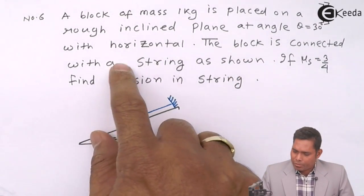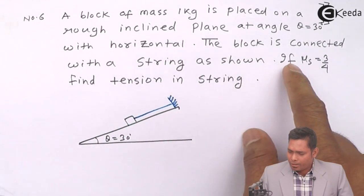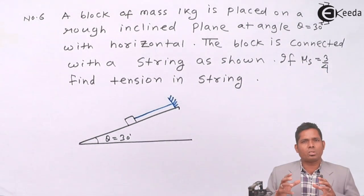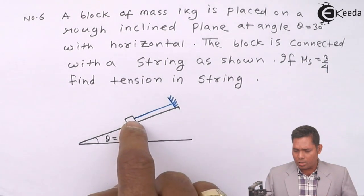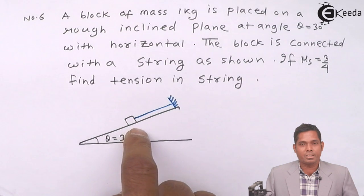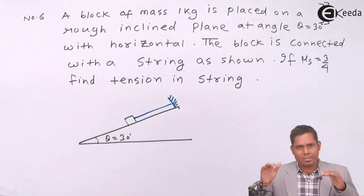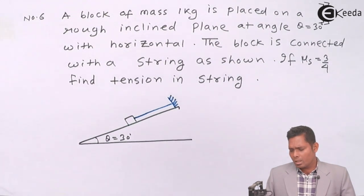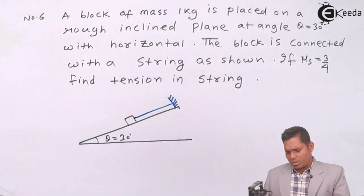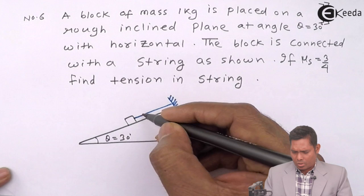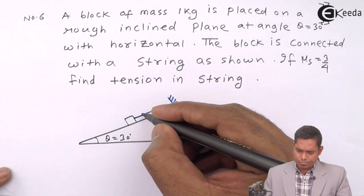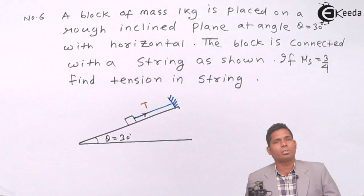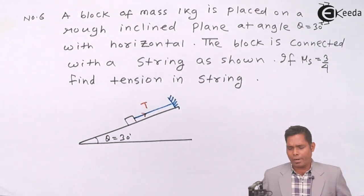The block is connected with the string as shown in the figure. Mu s is 3 by 4, which is the coefficient of static friction for the two bodies in contact — the block and the inclined surface. We need to find the tension in the string. Suppose the tension in the string is T.